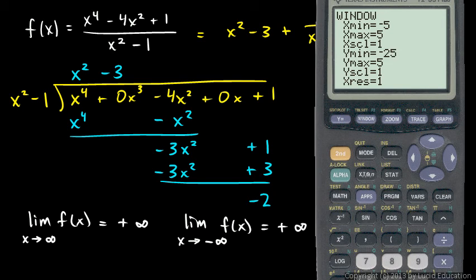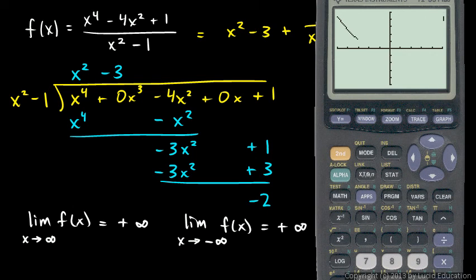So let's set the window here. Let's change this to negative 25 and positive 25. We'll change our scale there to 5.